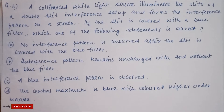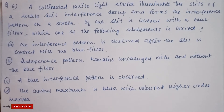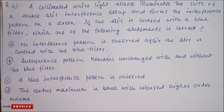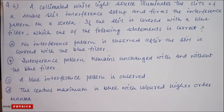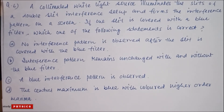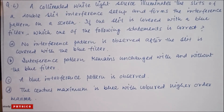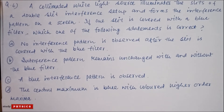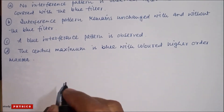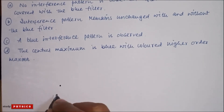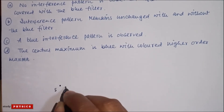Question number six: a collimated white light source illuminates the slits of a double slit interference setup and forms the interference pattern on a screen. If one slit is covered with a blue filter, which one of the following statements is correct? You are given four options. So if this is a source, this is a white light source and these are the slits.